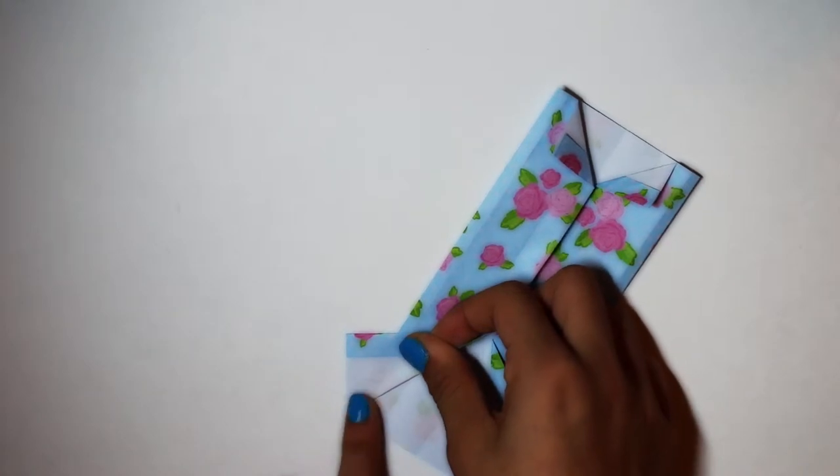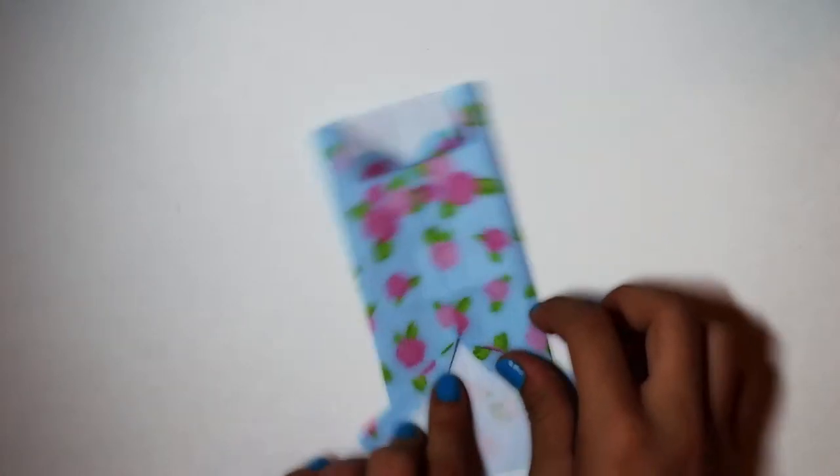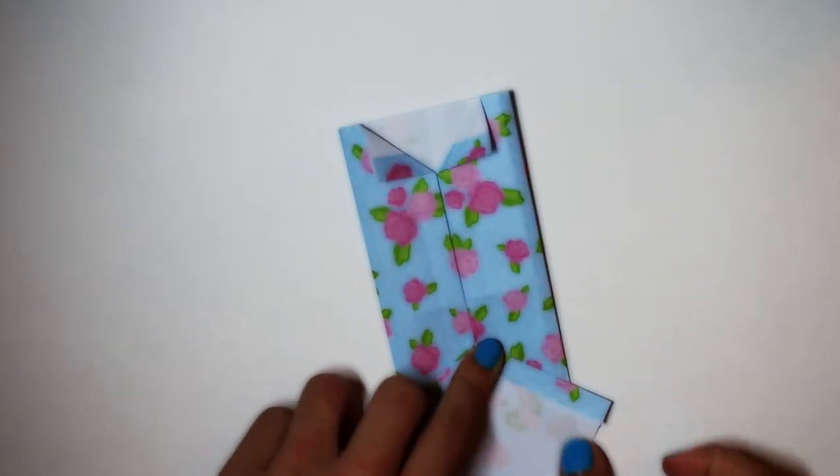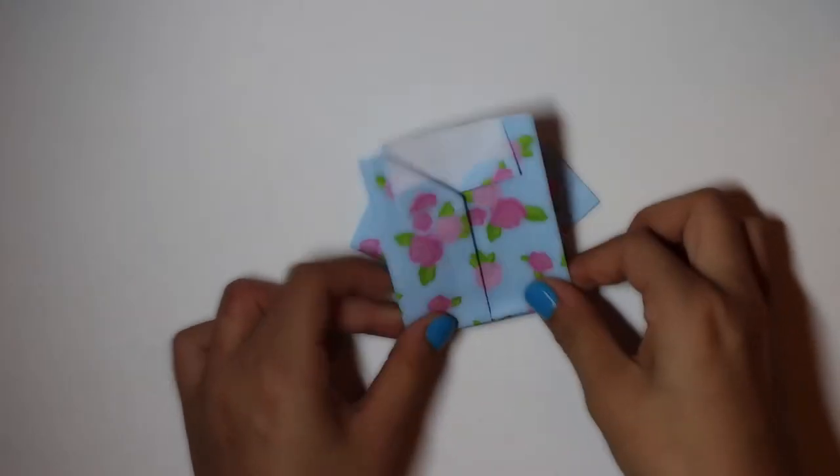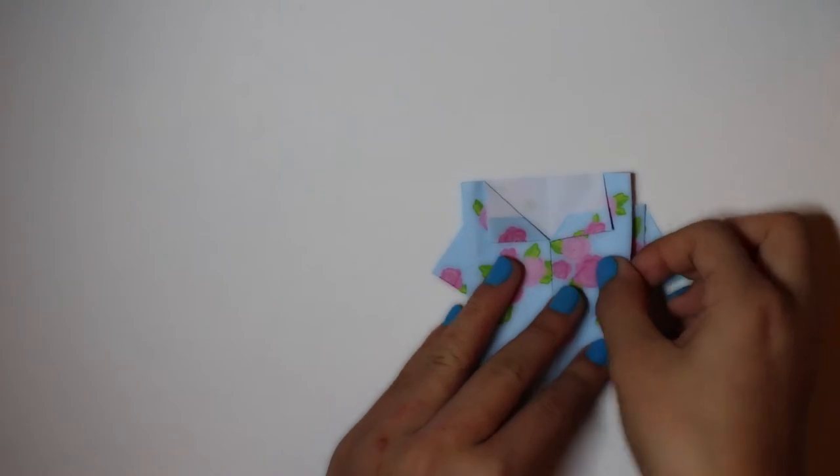Now, fold the flap on the other side and fold it back to make a triangle. And this will be the collar. Just fold it however you want your collar to look like.